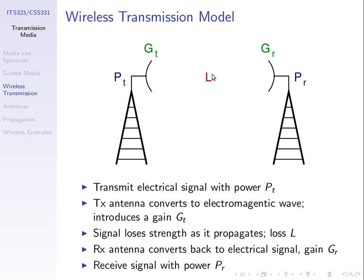As that signal propagates through the air, it loses power — it gets weaker due to attenuation. Any signal that travels some distance gets weaker. We denote this loss as L — the path loss from transmitter to receiver. We receive a signal and the receive antenna acts as an amplifier with some gain GR. The resulting receive power is: start with PT, amplify by GT, divide by the loss L, multiply by the receiver gain GR.